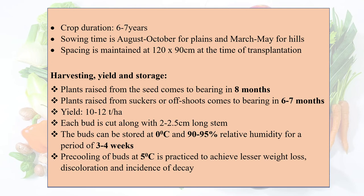The crop duration of globe artichoke is 6 to 7 years. Sowing time is August to October for plains and March to May for hills. Spacing is maintained at 120 × 90 cm at the time of transplantation.